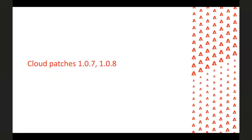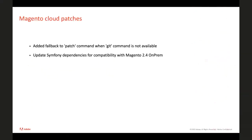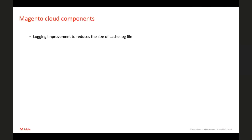The next topic is patches. In the Cloud Patches release, we added an alternative patch command for cases when git-apply patches isn't available — it can be useful for on-premise installations of Magento. We also updated some Symfony dependencies for compatibility with Magento 2.4, also for on-premise. Cloud Components has one improvement to reduce the size of the cache log file.